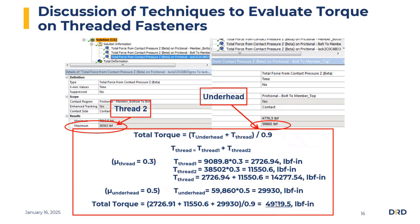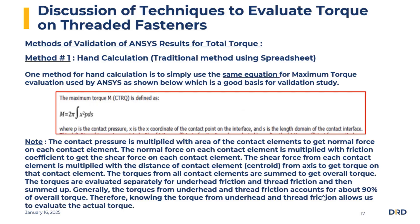In the webinar I'll cover a few more methods for determining the total torque. The first method is a traditional hand calculation approach: we take the contact pressure for each contact element and multiply by the area of the corresponding contact element to get the normal force. We then multiply the normal force by the friction coefficient to get the shear force on each contact element. That shear force is then multiplied by the distance of the contact element centroid from the axis to get the torque for each contact element, and we sum that up for all contact elements to get the overall torque. Keep in mind that the torques from the underhead and threaded friction account for about 90% of the overall torque.